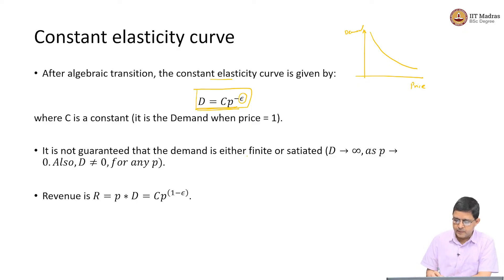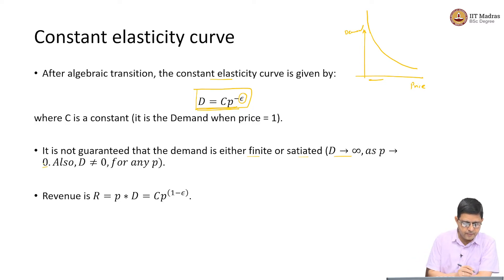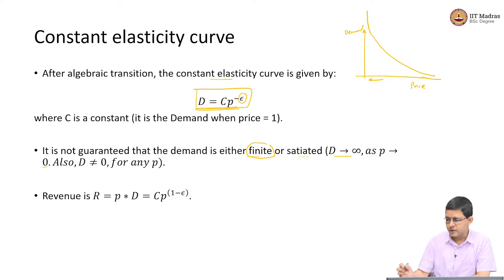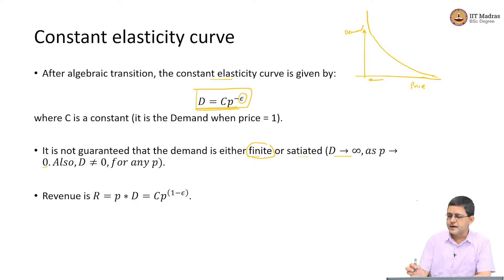For the constant elasticity curve, you cannot guarantee that the demand may be finite or that the market may be satiated. As P approaches 0, the demand keeps spiking and may even approach infinity as prices are reduced. The demand may never touch the x-axis — it may be asymptotic on the x-axis. So for any value of P, the demand may not become 0; there is always some customer trying to buy the product.